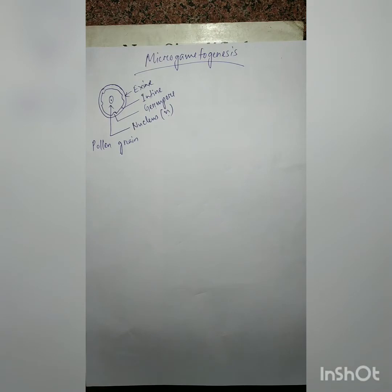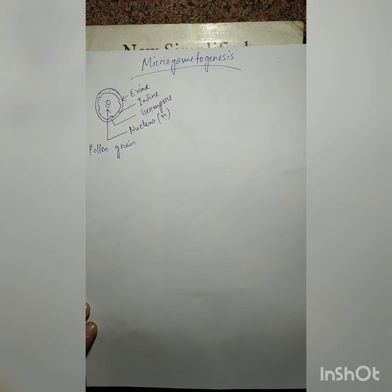Now what happens? The germination of pollen grain may start within the microsporangium, that is when it is present inside the anther, or it may take place after the anther ruptures and the pollen grains are transferred to the female reproductive organ, that is your stigma.